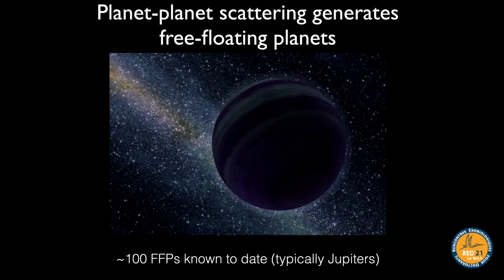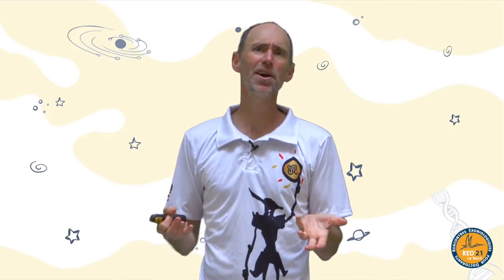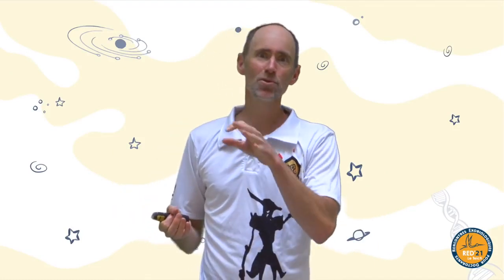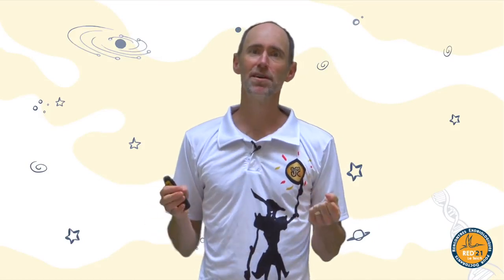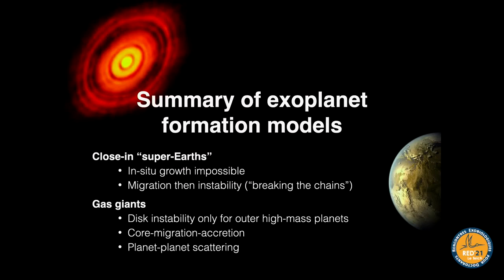For every instability, one or more planets get ejected into interstellar space as free-floating planets. They cool down and are hard to detect, but if you look in the right place you can find them. More than a hundred free-floating planets have been found to date, mostly Saturns or Jupiters because they're easier to detect, but with microlensing even free-floating planets somewhat more massive than Earth have been found.